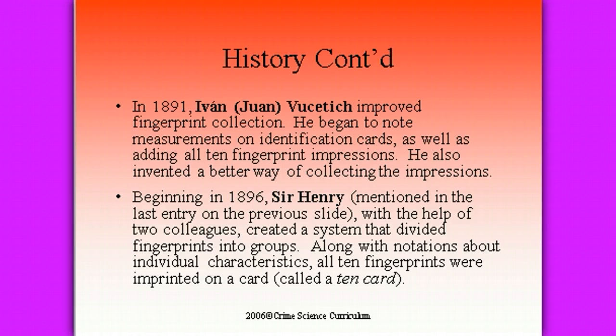Beginning in 1896, Sir Henry and two colleagues created a system that divided fingerprints into groups with notations about individual characteristics visible in the patterns. All ten fingerprints were imprinted on a card — what we call the ten card. That ten card is used when people go to jail or are incarcerated. Many professions also require fingerprinting for tracking purposes. For example, when I took my first teaching job and moved to Arizona, when I moved back and renewed my license, I had to be fingerprinted again — any time you leave the state for a year or more, you must have your fingerprints done to make sure you didn't commit a crime in a different state.